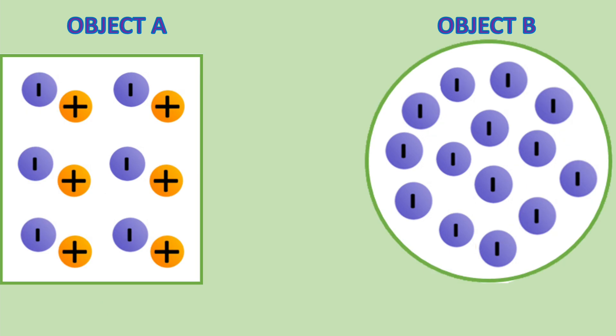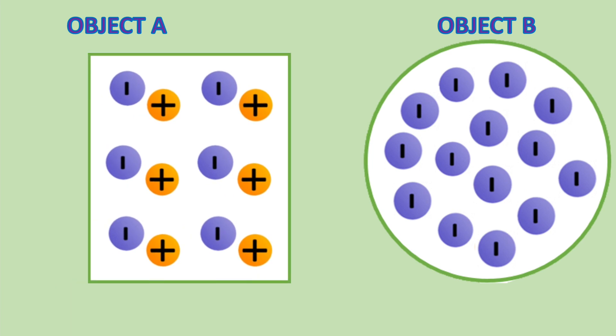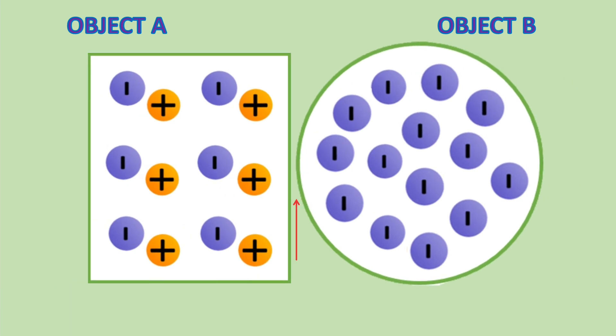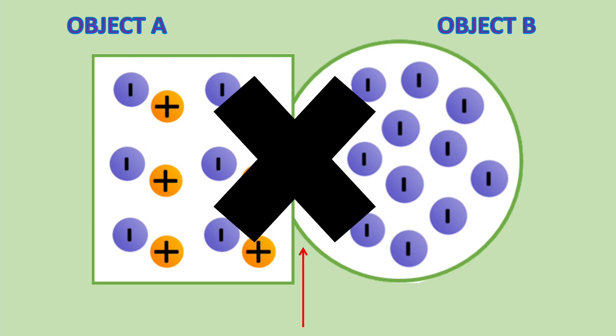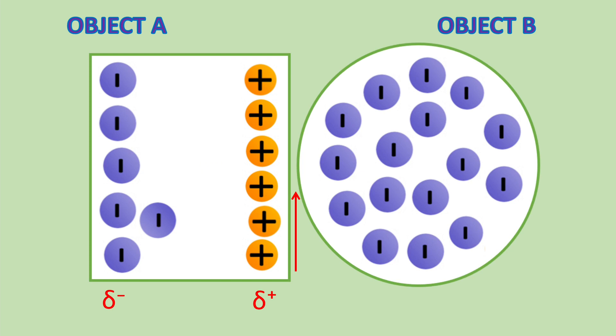I mentioned object A and object B are brought closer to each other without making any contact. That means the objects do not touch. If they do touch, there will be a transfer of electrons from one object to another, then the object becomes charged. This is not polarization. So for an object to become polarized, no contact must be made between the objects.